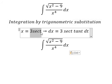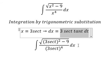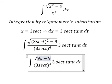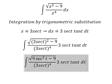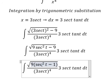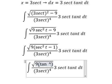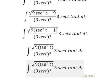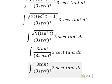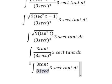I substitute this into the integral. For x we substitute this expression, giving nine secant squared t. Applying factorization, secant squared t minus one becomes tan squared t. Combined with the other terms, we get 81 secant t to the power of 4.